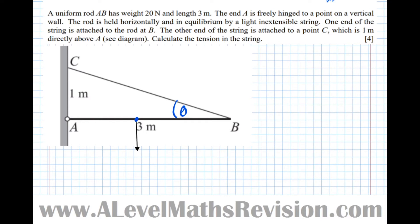So the weight acts downwards like that, and it's 20 newtons, not 20g, because we're already given the weight. We also know that the tension here is holding up the rod. So T for tension.